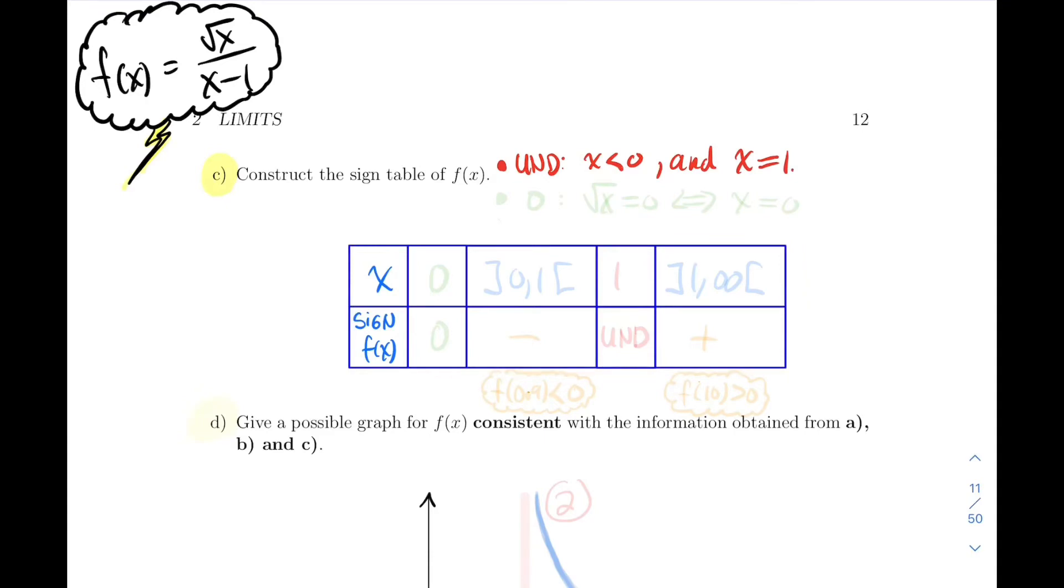We're not going to do a column for the interval from minus infinity to zero and write undefined. Normally if the domain starts somewhere, the sign table will start at that place also. What about zero here? When is the function equal to zero? We're just looking at the numerator. When is the square root of x equal to zero? This will happen only if x is equal to zero.